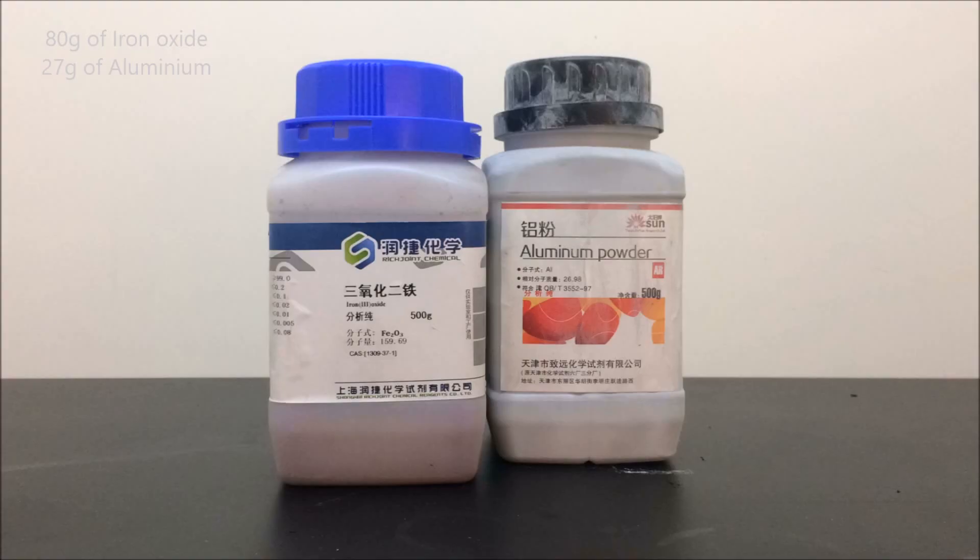To start things off, only two chemicals are needed. Here I use 80 grams of iron oxide and 27 grams of aluminum powder. It can be easily scaled up or down to suit your needs. In the future, I plan to make a video of how to synthesize iron oxide. But for now, I just go with the laboratory grade one.